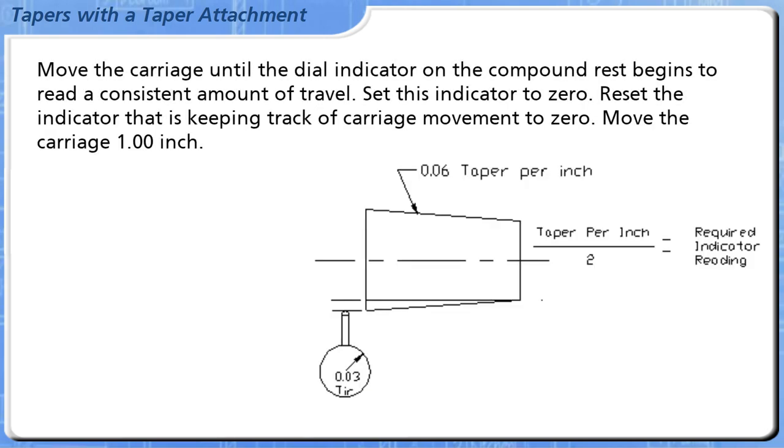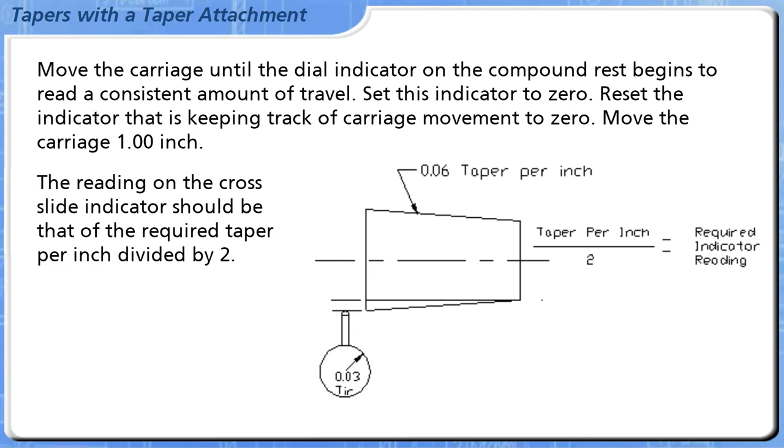Move the carriage until the dial indicator on the compound rest begins to read a consistent amount of travel. Set this indicator to zero. Reset the indicator that is keeping track of carriage movement to zero. Move the carriage 1.00 inch. The reading on the cross slide indicator should be that of the required taper per inch divided by two.